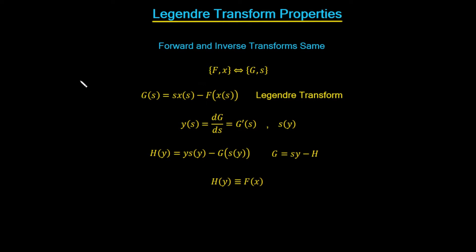Let's finish off with the Legendre transform and look at some of its properties. We mentioned in the first video that the forward and inverse transforms are the same. We could write it symbolically: a function f of independent variable x transforms to a function g of independent variable s, and the transform works both ways.